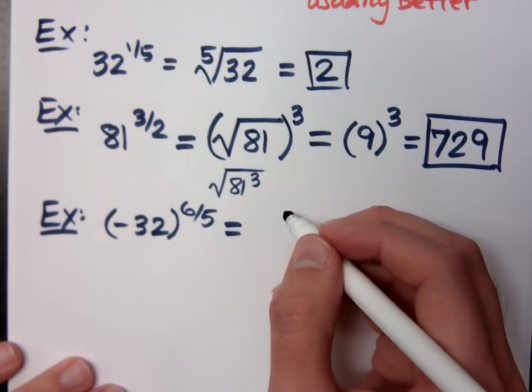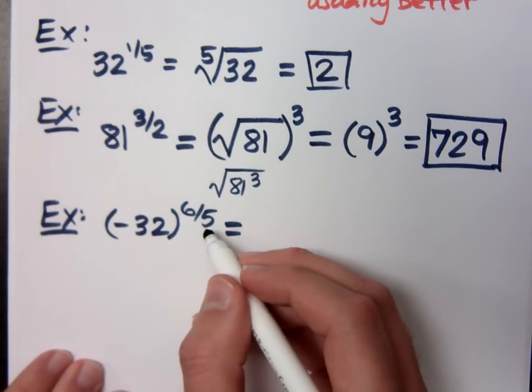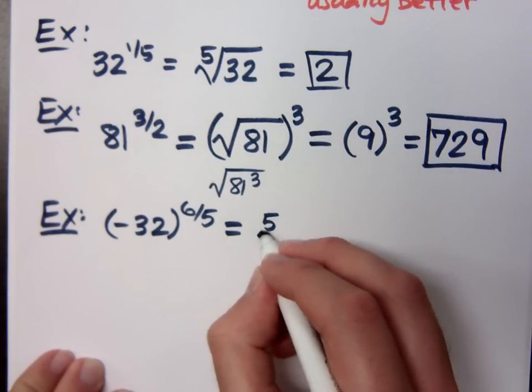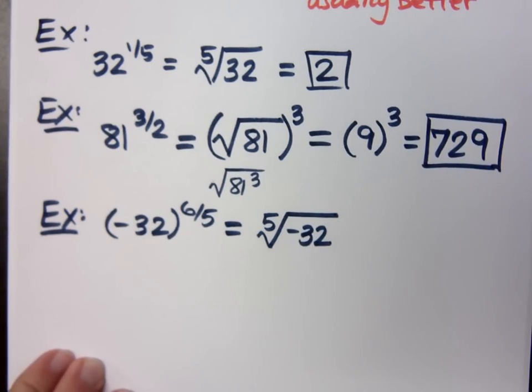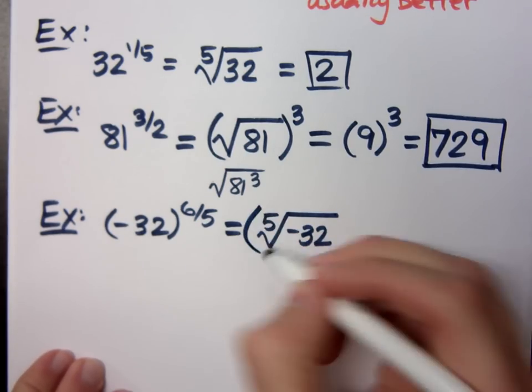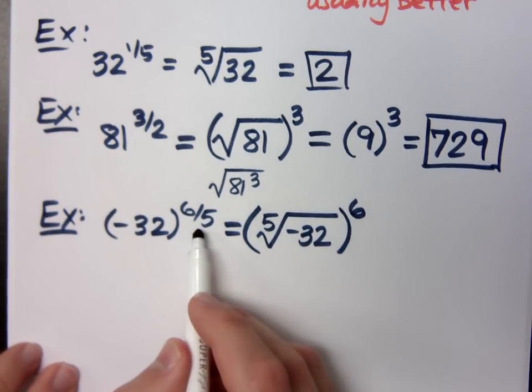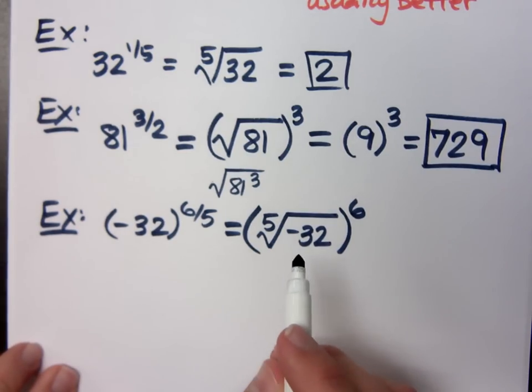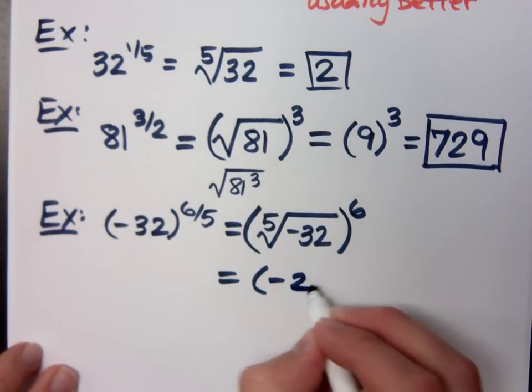How can I rewrite this guy so that I can work it? It's the fifth root. Do you remember my little jingle for remembering what the index is? Remember, the denominator of the power is the index of the radical. So my denominator of the power is 5, which means that's the index of my radical. So what's the fifth root of negative 32? So this guy's pretty simple. It's negative 2 raised to the sixth.